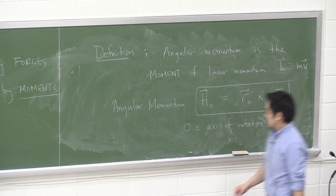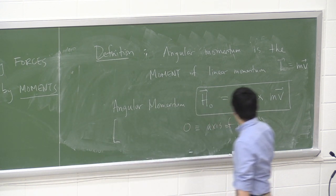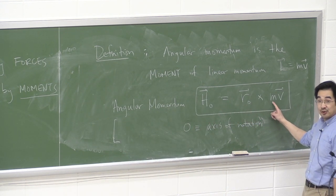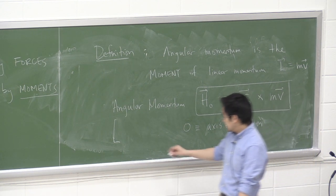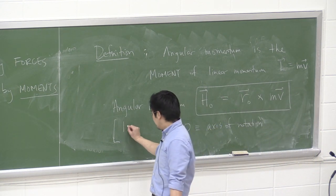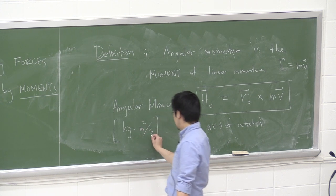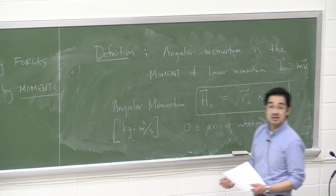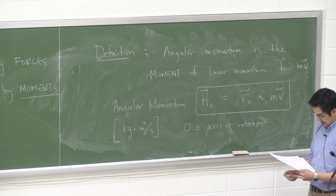Just to be clear on units: angular momentum has units of kilogram times meters squared per second — that's mass times velocity times an extra distance. So be extra careful with those units.